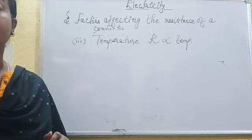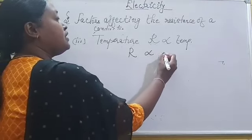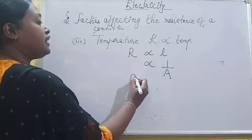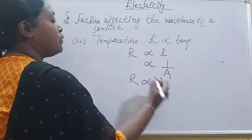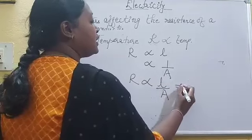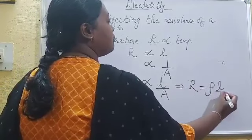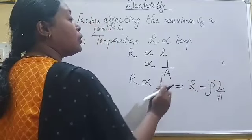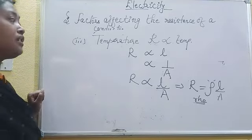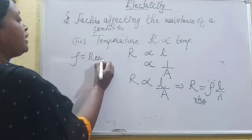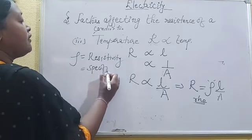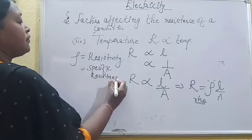From the three factors, we conclude that resistance is directly proportional to the length, and inversely proportional to the area of cross-section. Combining these two factors, we can write: R is directly proportional to L upon A. If we remove the proportionality sign, we get R is equal to rho times L by A. Here, the symbol rho — spelled R-H-O — is the proportionality constant. It is known as the resistivity of the conductor, also called the specific resistance of the conductor.